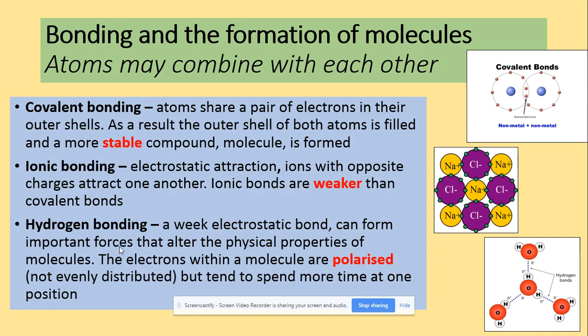In terms of reactions, we need to be aware of the bonds involved, because the formation of molecules involves different types of bonds to combine atoms. Covalent bonding is where atoms share a pair of electrons in their outer shells, and as a result the outer shell of both atoms is filled and a more stable compound or molecule is formed.